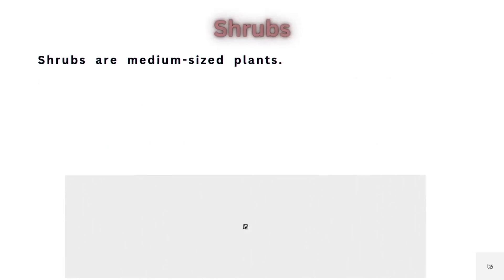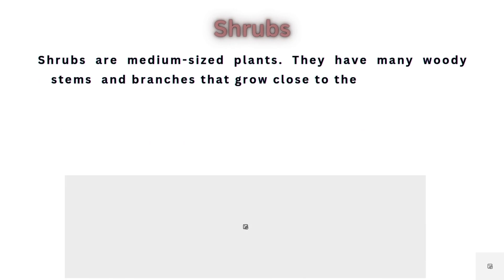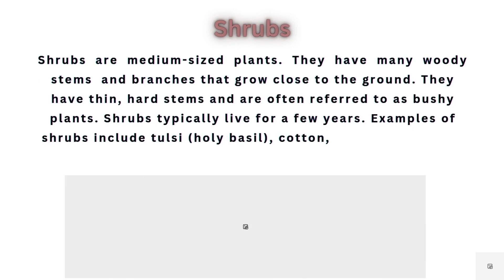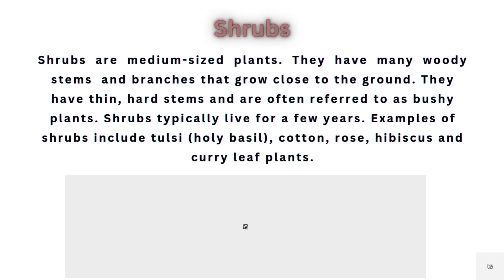Shrubs are medium-sized plants. They have many woody stems and branches that grow close to the ground. They have thin, hard stems and are often referred to as bushy plants. Shrubs typically live for a few years. Examples of shrubs include tulsi, holy basil, cotton, rose, hibiscus and curry leaf plants.